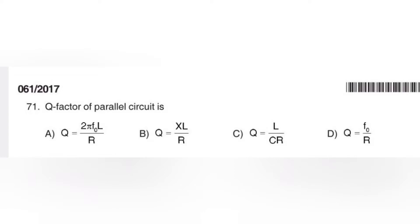For the RLC circuit, the Q factor is 2πF₀L/R. The answer is Option A: Q = 2πF₀L/R. Q factor is equal to the impedance being higher — that is correct. This is the value of Q factor.